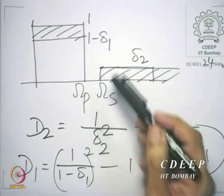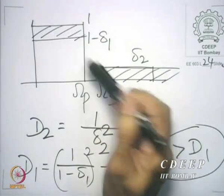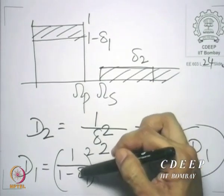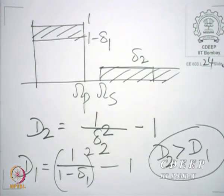Naturally, d2 is expected to be greater than d1, otherwise it does not make sense. That is because delta_2 is definitely expected to be less than 1 minus delta_1, and therefore 1 by delta_2 squared is greater than 1 by (1 minus delta_1) squared. If the pass band amplitude were to go below the stop band, it would not make sense to design the filter. Therefore, d2 must be strictly greater than d1.